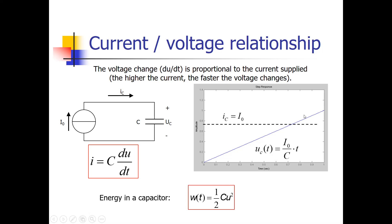Now something about the energy in the capacitor. The energy stored in the capacitor is equal to 0.5 times C, the capacitance value, times U squared. So U times U — remember that. The energy in the capacitor, called W, is 0.5 times C times U squared.